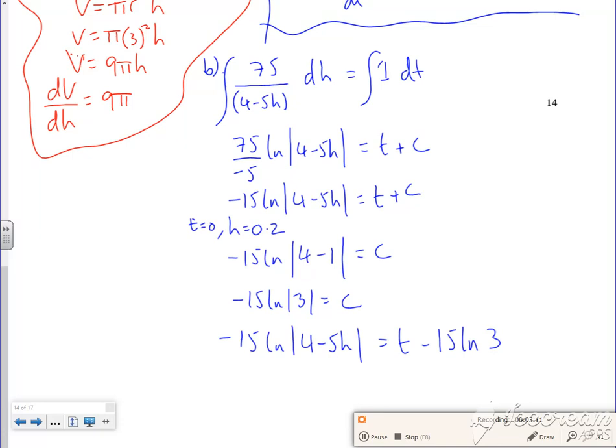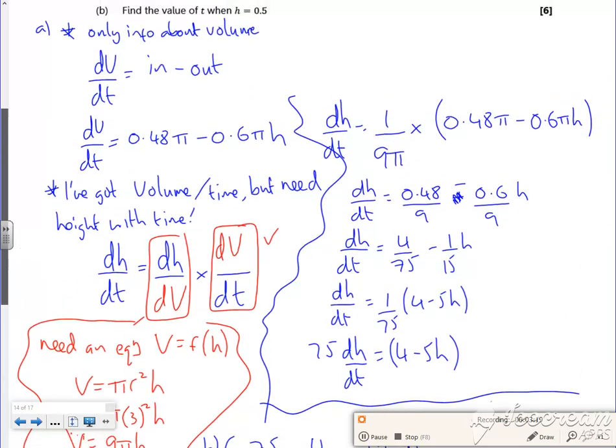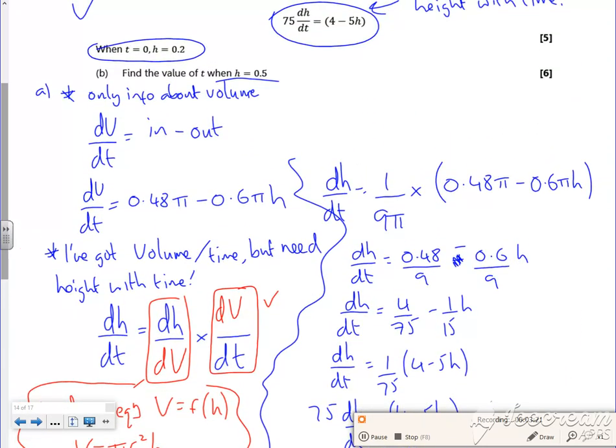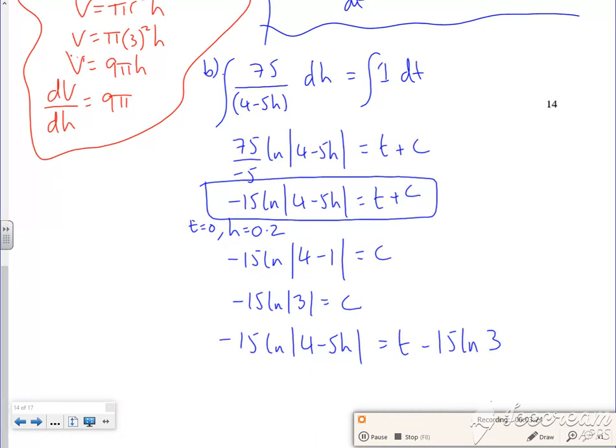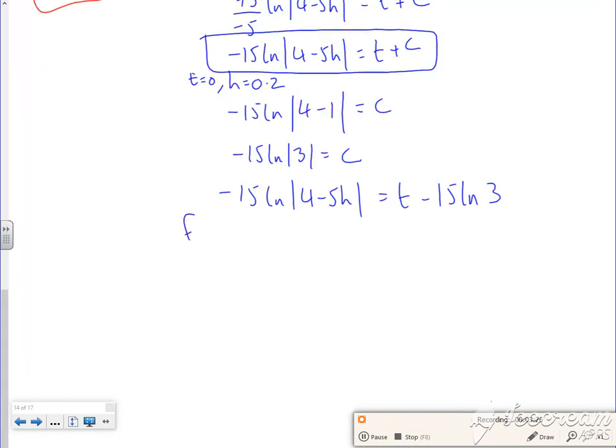So that's my particular solution that I've got. So I had a general solution which was here, and then I subbed in the 0 and the 0.2 to give me that. Now what I want to do is find T when H is 1 half. So this is the last bit of this now.